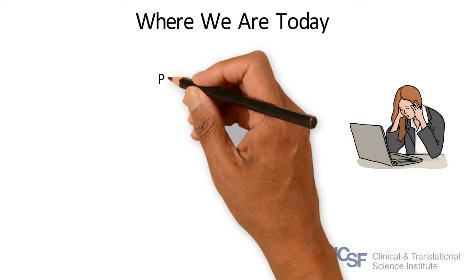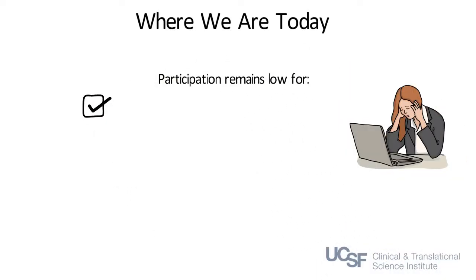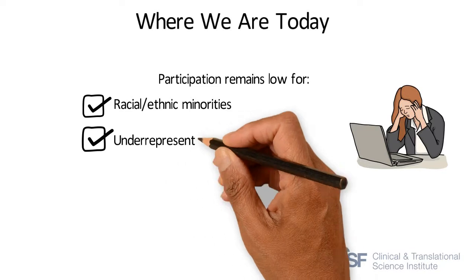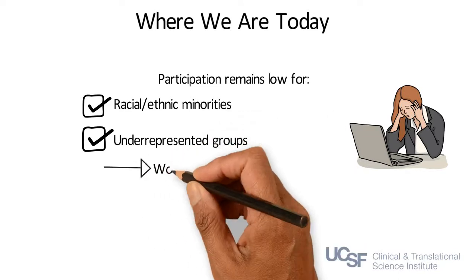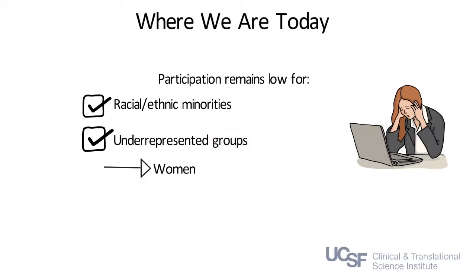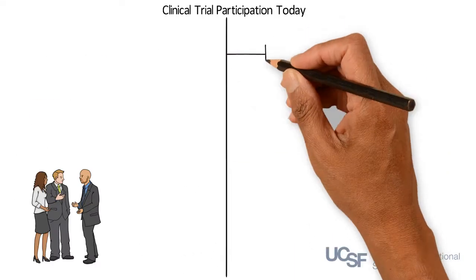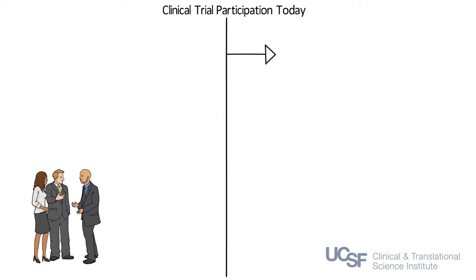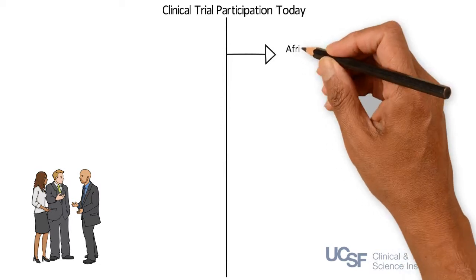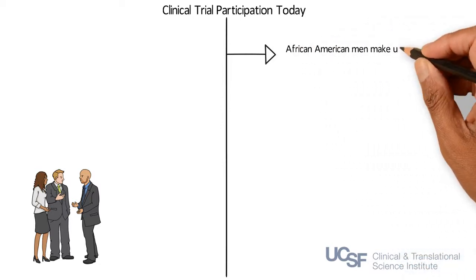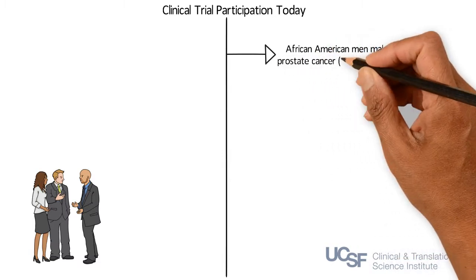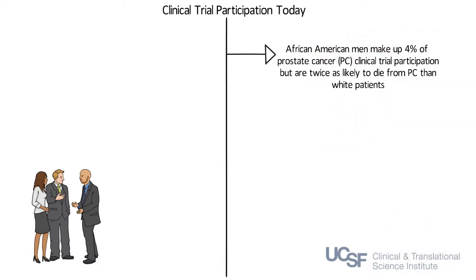Despite national efforts and interests, research participation remains low for racial and ethnic minorities and other underrepresented groups such as women, low socioeconomic status populations, and older adults. For example, African American men are twice as likely to die from prostate cancer than whites, but represent only 4% of prostate cancer clinical trial participants.